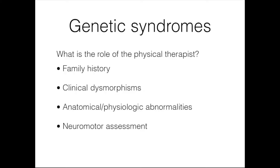Looking at genetic syndromes, the role of the physical therapist involves assessing whether genetic syndromes may be a factor when working with children and families. A good family history may reveal an inherited disorder. We want to look for clinical dysmorphisms — the different physical and biological characteristics commonly seen in individuals with genetic syndromes — and look for evidence of anatomical or physiological abnormalities, such as brain abnormalities captured on imaging.